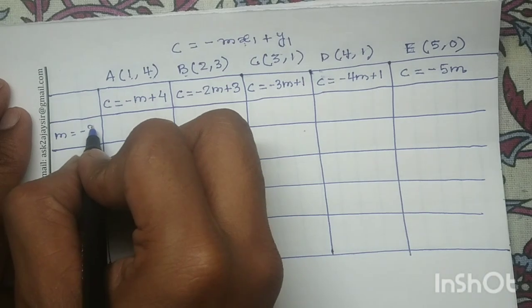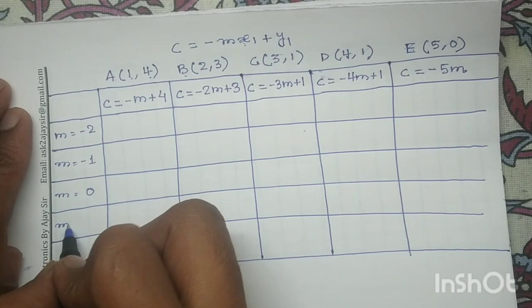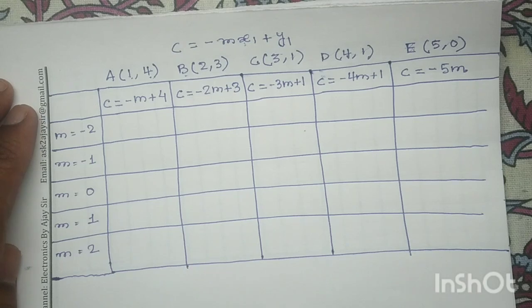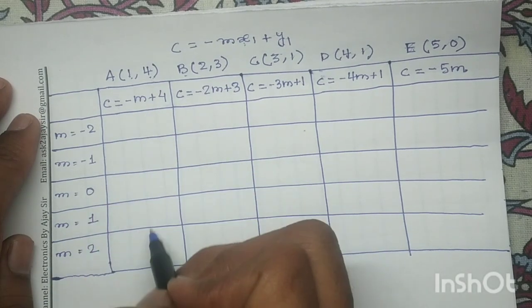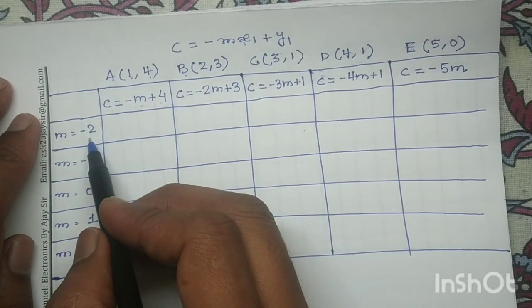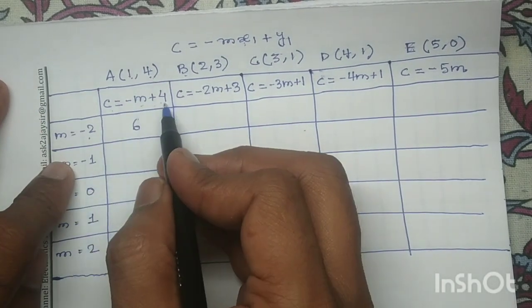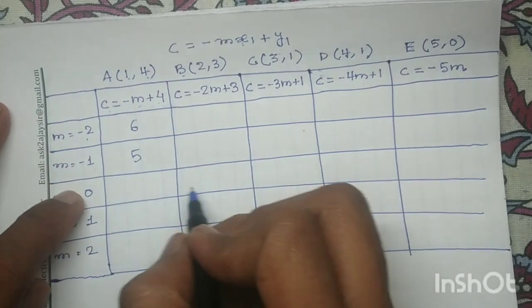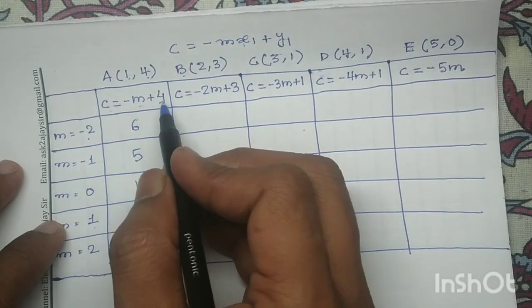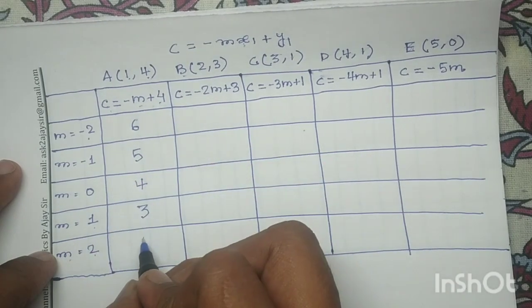We write m equals −2, −1, 0, 1, and 2. In the first column, the equation of c is −m + 4. Substituting m=−2 gives 6; m=−1 gives 5; m=0 gives 4; m=1 gives 3; and m=2 gives 2. In the second column, equation is −2m + 3: substituting m=−2 gives 7; m=−1 gives 5; m=0 gives 3; m=1 gives 1; and m=2 gives −1.